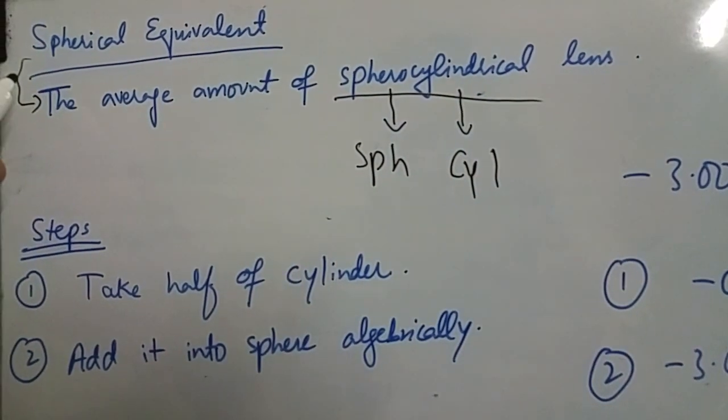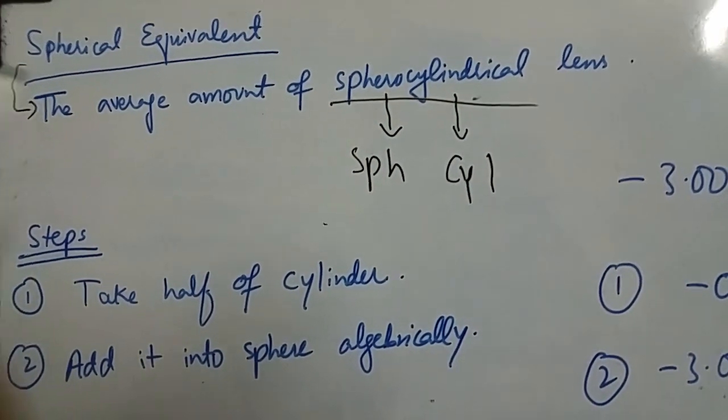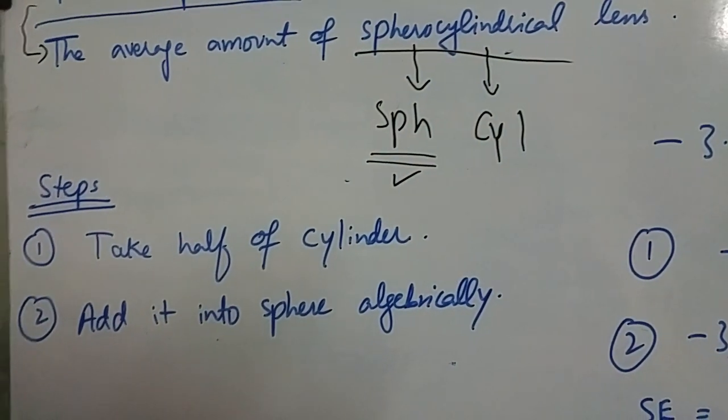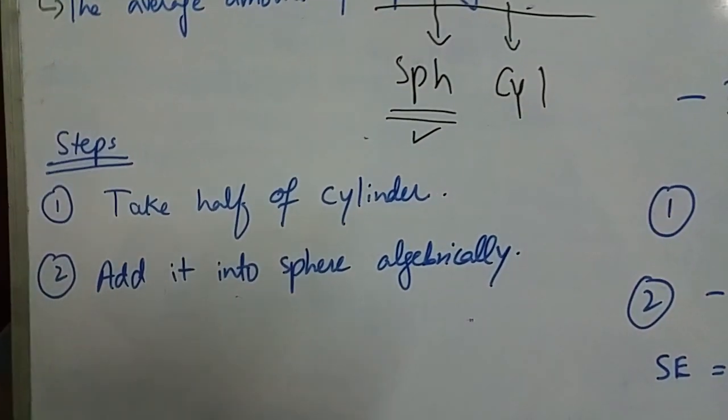And spherical equivalent is used in conditions where we want to give only spherical correction. So what are the steps to find out spherical equivalent of a prescription?